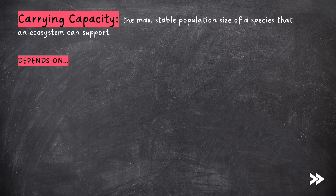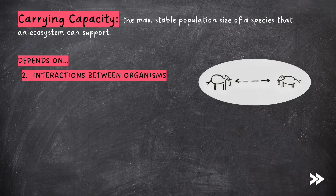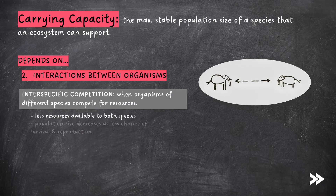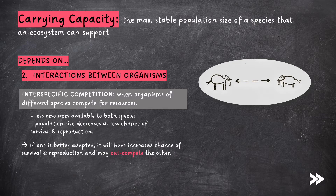The carrying capacity also depends on interactions between organisms, which includes inter- and intraspecific competition. Interspecific competition is when organisms of different species compete for resources. This means there are fewer resources available to both species, decreasing population size as there is less chance of survival and reproduction. If one species is better adapted, it will have an increased chance of survival and reproduction and may out-compete the other species.